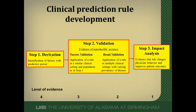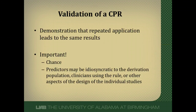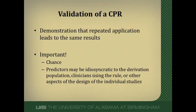After deriving the prediction rule, it must be validated to ensure it really predicts what we think it will. There are two types: narrow validation and broad validation. We want to confirm that using the rule repeatedly leads to the same results and probabilities. Predictors can be idiosyncratic to the population they were derived on and may not predict well in others, so we need to ensure the rule works on different people.